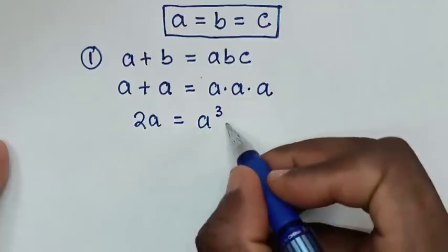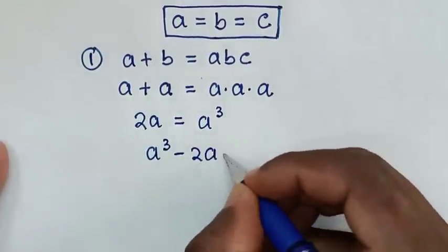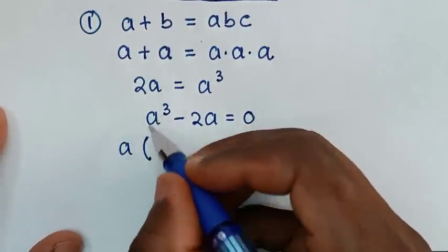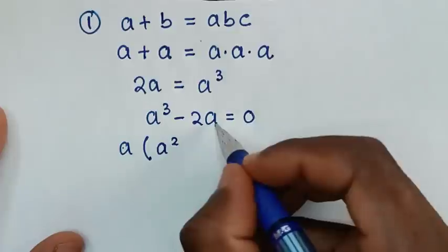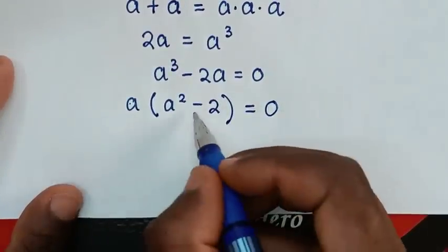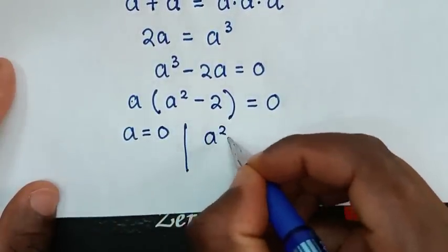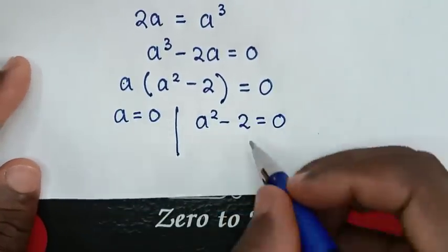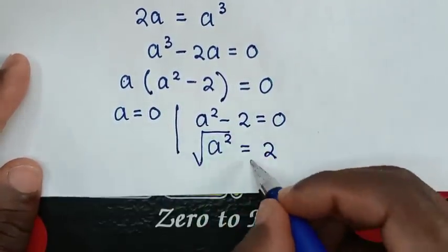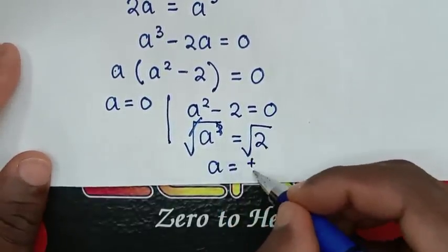Taking 2A to the right side: A cubed minus 2A equals 0. Factoring out A: A times (A squared minus 2) equals 0. This gives two solutions. First, A equals 0. Second, A squared minus 2 equals 0, so A squared equals 2, and applying square root to both sides gives A equals plus or minus square root of 2.